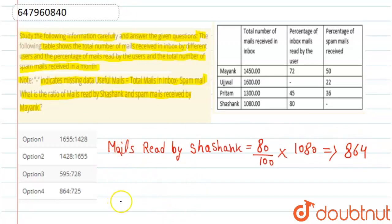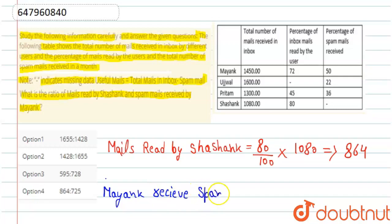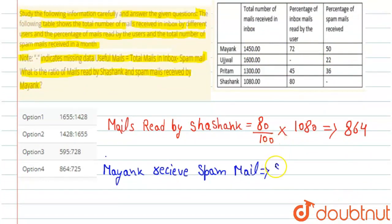Now let's find Mayank's spam mail received. Mayank's total mail received is 1450. Spam mail for Mayank is 50%, so 50 upon 100 multiplied by 1450 equals 725.